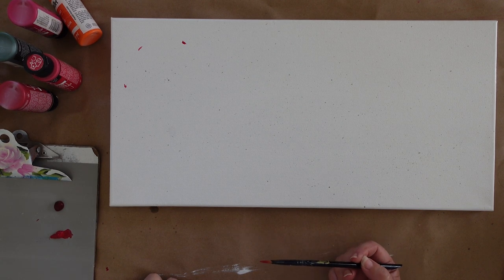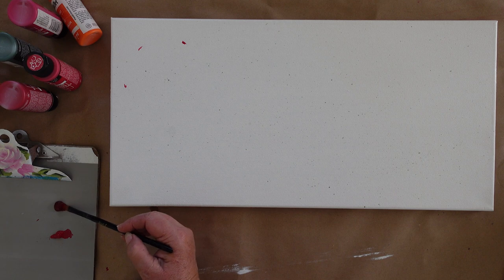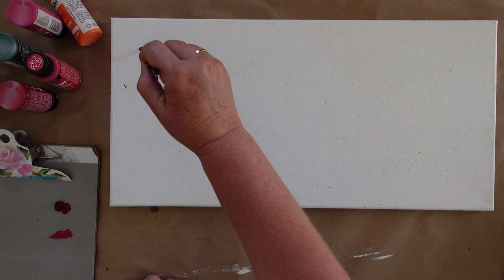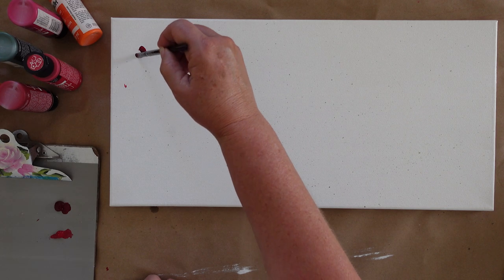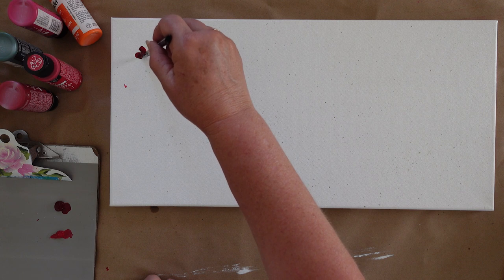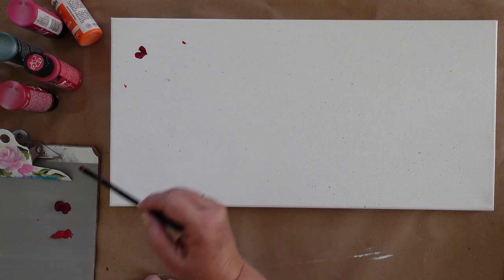So I made myself some parameters and then I'm just going to start creating my petals. Now I'm going to get myself some berry wine on the brush. I didn't clean it, no need. And I'm just going to create some teardrop petals. Press, lift, twist with my fingers and come to a point.